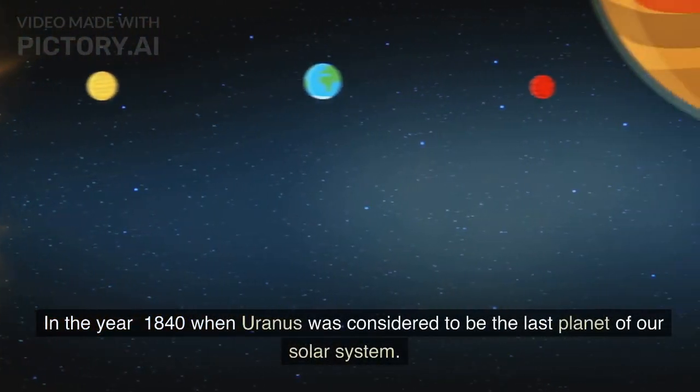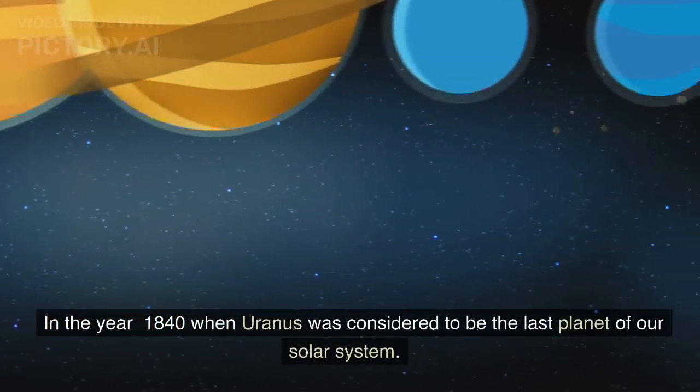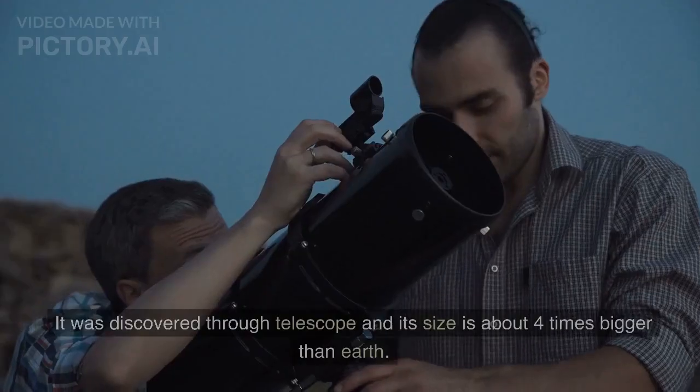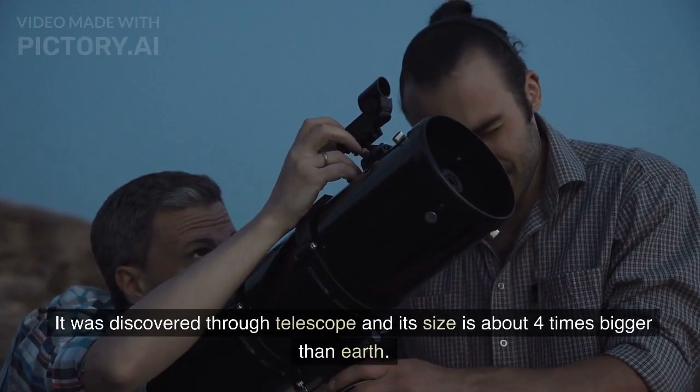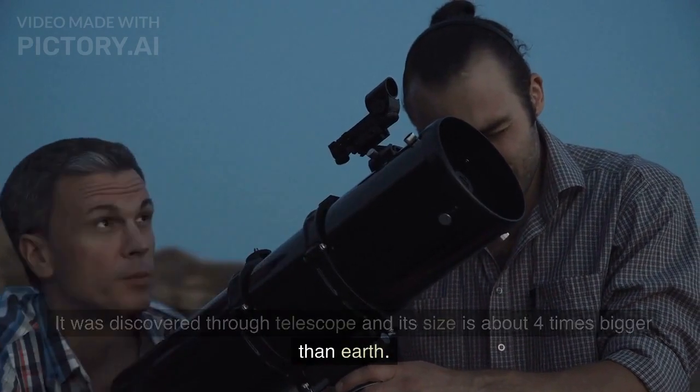In the year 1840, Uranus was considered to be the last planet of our solar system. It was discovered through a telescope and its size is about four times bigger than Earth.